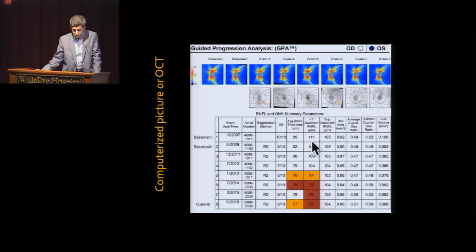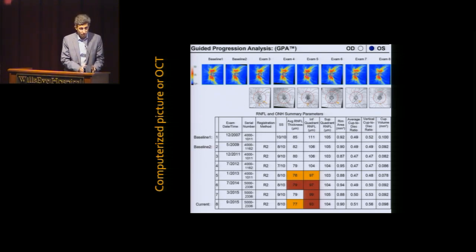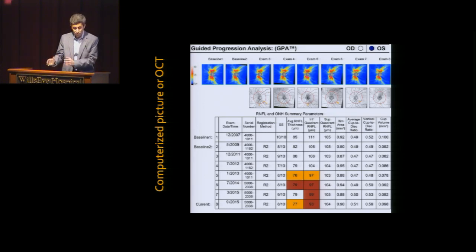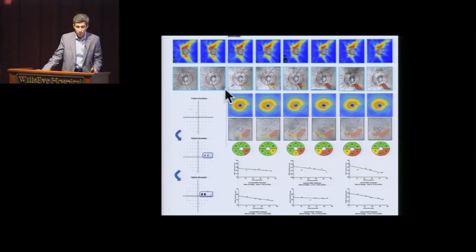As you can see, decreasing numbers over time are a warning sign that glaucoma is getting worse. In some patients, we may see changes in the OCT while not yet seeing any change in the visual field test. We need to check both structure and function. Early changes may appear in the OCT months or years before they show up in the visual field test if glaucoma is not treated appropriately.